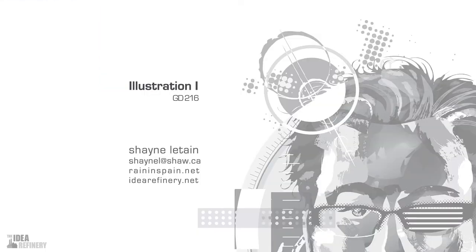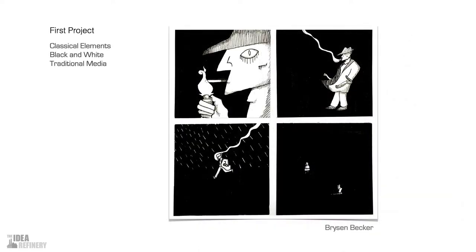Now, before we get into anything too specific regarding illustration, let's talk about what I'm looking for from you this term. We are going to be doing four projects in total. The first is a black and white traditional media project — using pen and ink, paper, and the usual art supplies — creating a set of four illustrations that reflect the classical elements: earth, air, fire, and water.